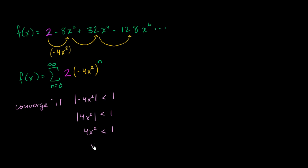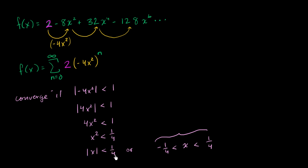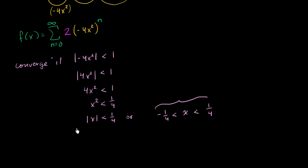Dividing both sides by 4, we get x squared less than one fourth, which means the absolute value of x must be less than one half — wait, less than one fourth. Equivalently, negative one fourth must be less than x, which must be less than positive one fourth. Expressed as an inequality, this is the interval of convergence. The radius of convergence is one fourth: this series converges as long as x stays less than one fourth away from 0.